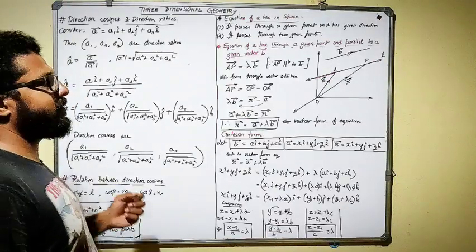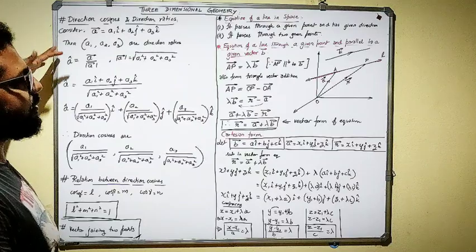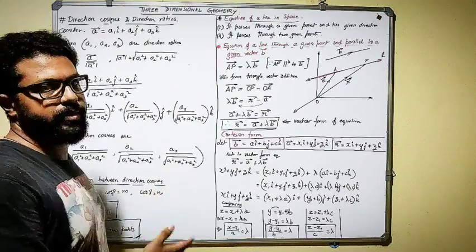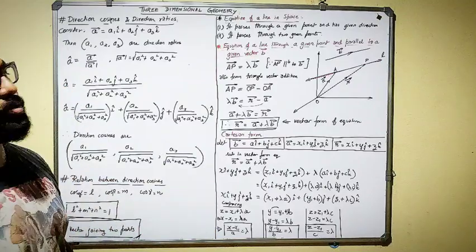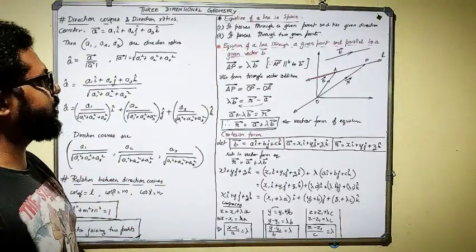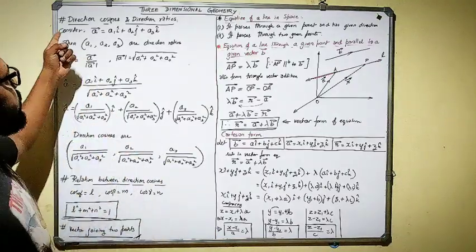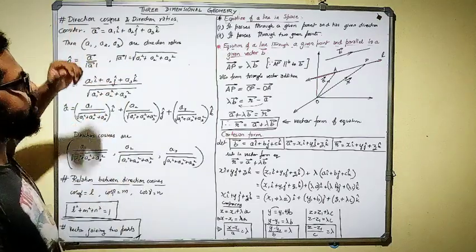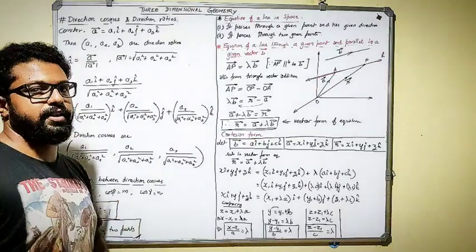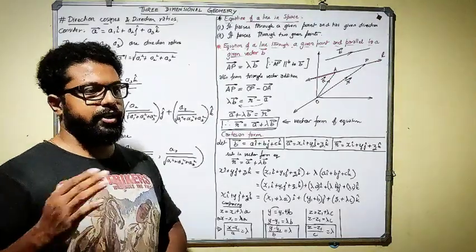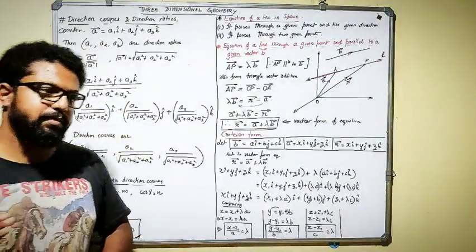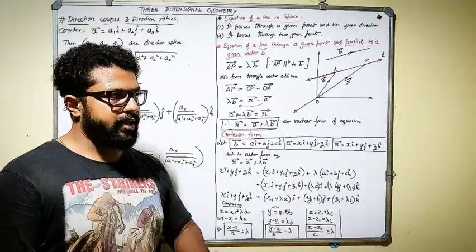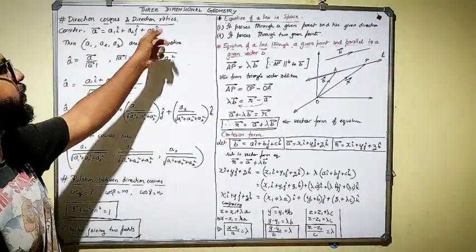I want you all to quickly revise the topics you have already learnt in vectors, because the first exercise of three-dimensional geometry is completely based on those formulas. The first topic is direction cosines and direction ratios, which you have already learnt. Direction cosine is the cosine of the angle made by the position vector with respect to the x-axis, y-axis, and z-axis. Direction ratios are simply the components of a vector.